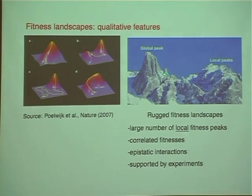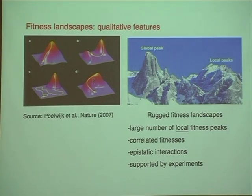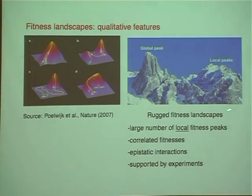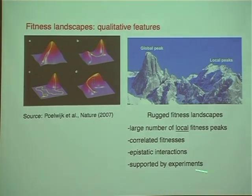Today I am interested in understanding adaptation dynamics on rugged fitness landscapes — you heard a little about this from the previous talk. Rugged fitness landscapes have a global peak and many local peaks. They are characterized by a large number of local fitness peaks, correlated fitnesses, and epistatic interactions. This is the general class supported by experiments, which suggest that fitness landscapes are indeed rugged.